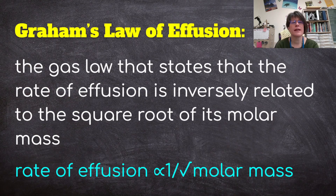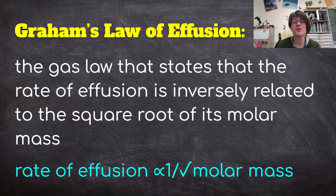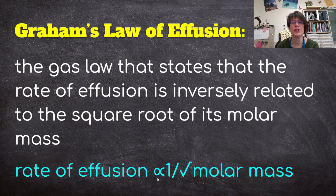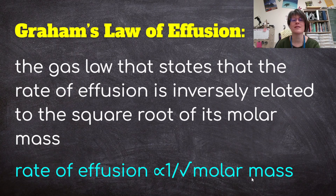There is a gas law to go with this — Graham's Law of Effusion. It states that the rate of effusion is inversely related to the square root of its molar mass. The equation shows rate of effusion proportional to 1 over the square root of the molar mass. Note that the square root sign covers the entire molar mass expression — it is inversely proportional.